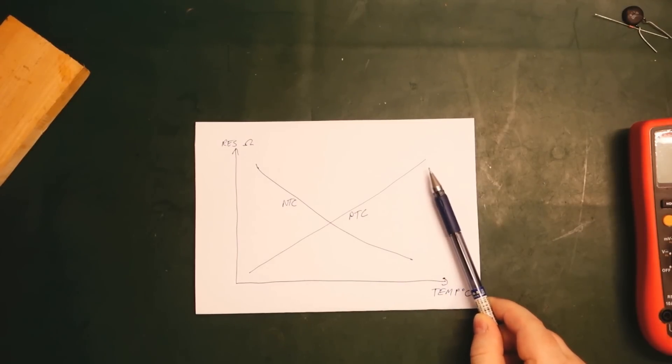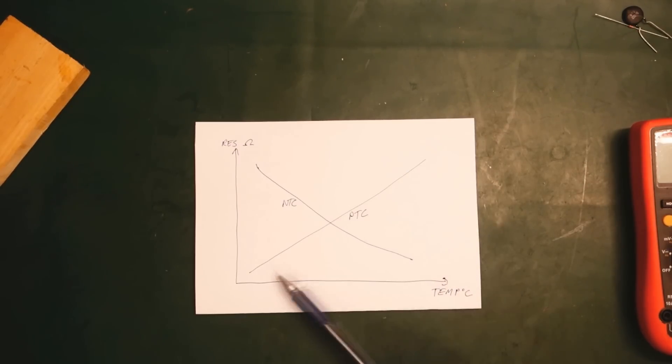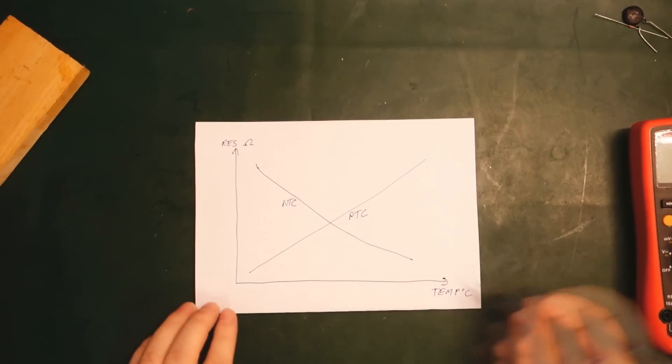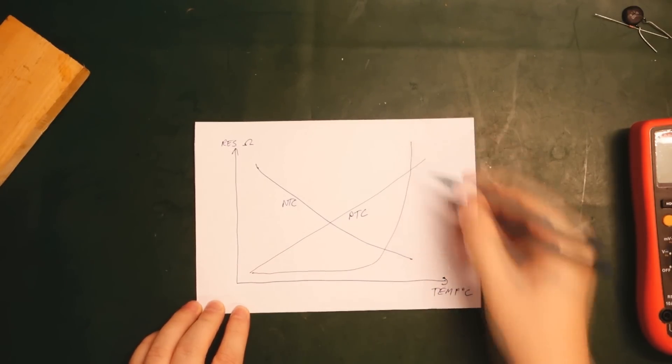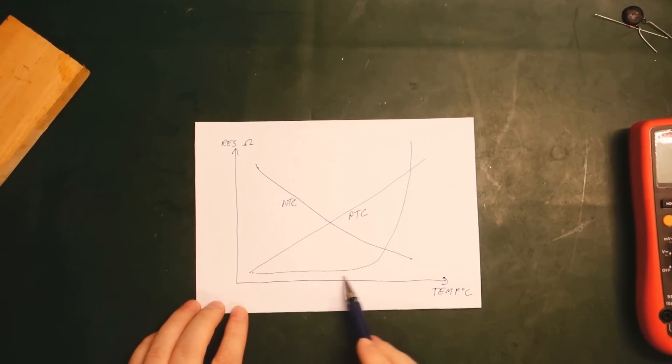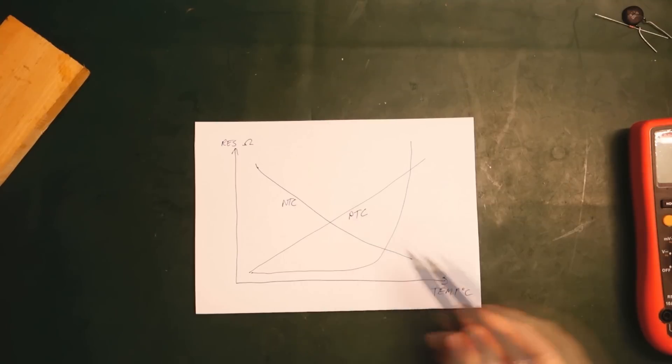PTC thermistors are often used for current limiting, so you can use it as a protection. Many multimeters have PTCs on their inputs for limiting them, and typically something like poly fuses. Then typically it will look more like this - you'll have a fairly constant resistance in the PTC.